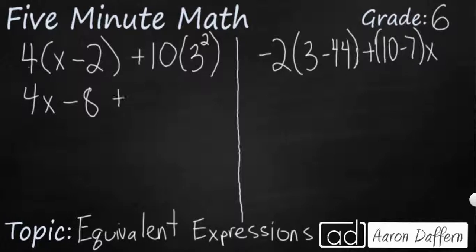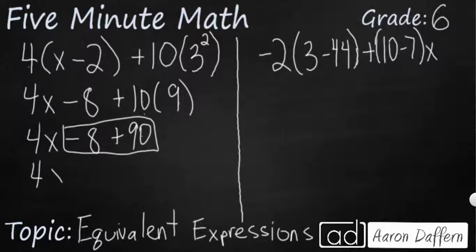And then we have a 10 parentheses 3 squared. Well, 3 squared is an exponent. Let's go ahead and take care of that. That's just going to be 9. So now we need to get rid of this parentheses here, which really just represents multiplication. So when you have a number right next to parentheses, that means multiplication. So 10 times 9, that's going to be 90. So all we have left here is 4x minus 8 plus 90. So let's take care of this right here. Minus 8 plus 90. And you see that we are going to simplify down to 4x plus 82.